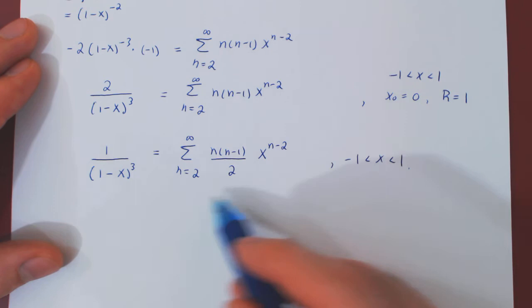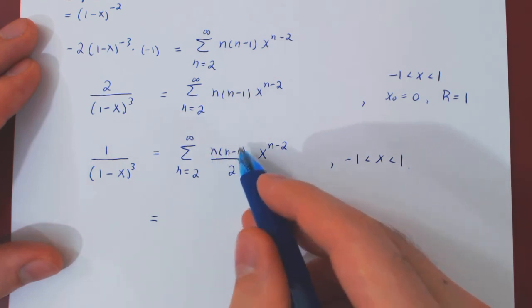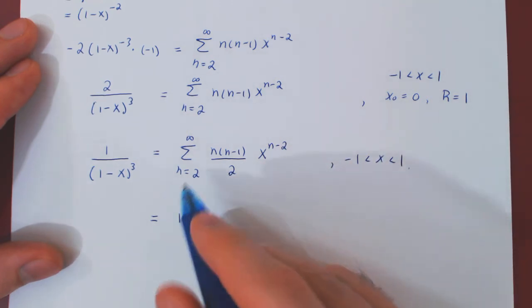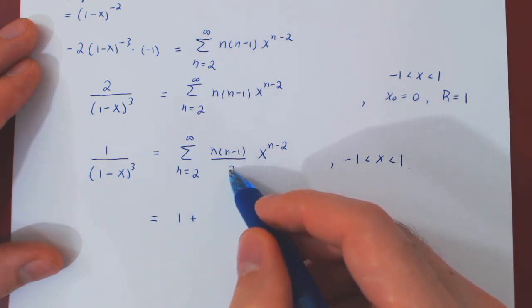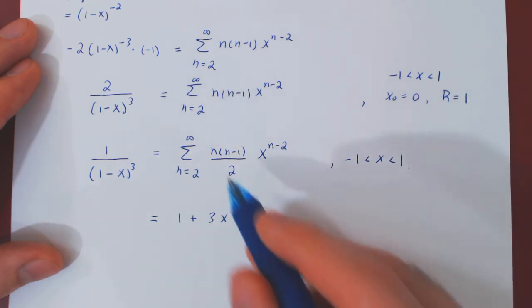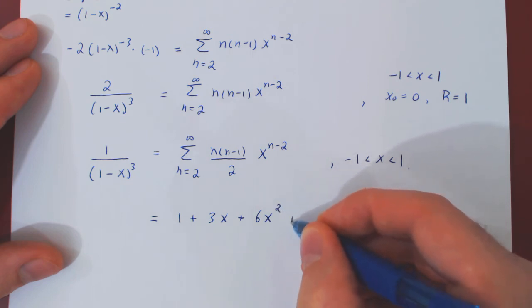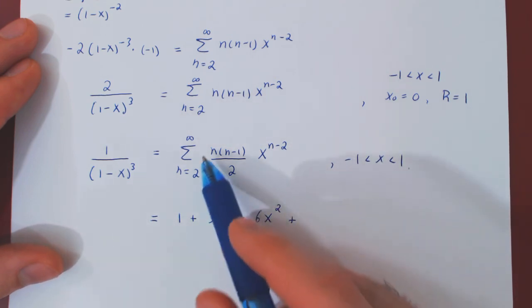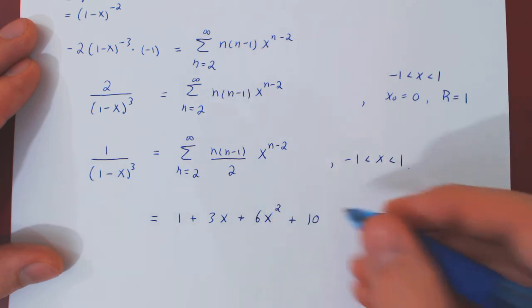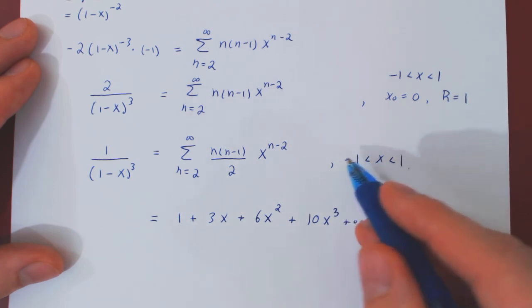Expanding the first few terms: when n equals 2 we get 2 times 1 over 2 equals 1, and x to the 0 is 1, so we get 1; plus when n equals 3 we get 3 times 2 over 2 equals 3, so 3x; plus when n equals 4 we get 4 times 3 over 2 equals 6, so 6x squared; plus when n equals 5 we get 5 times 4 over 2 equals 10, so 10x cubed, and so forth, on the open interval from negative 1 to 1.